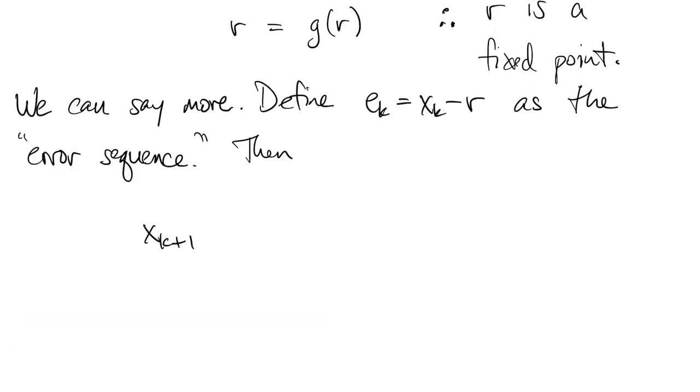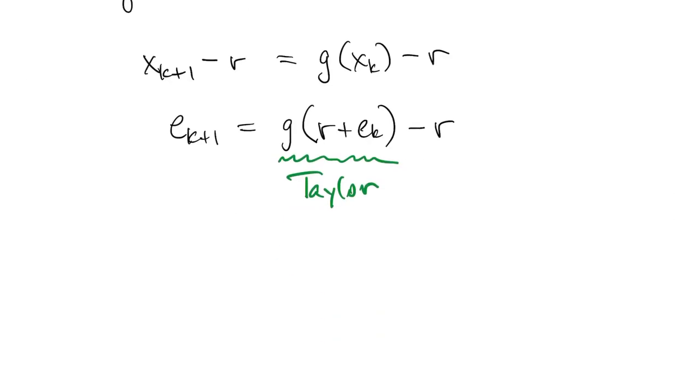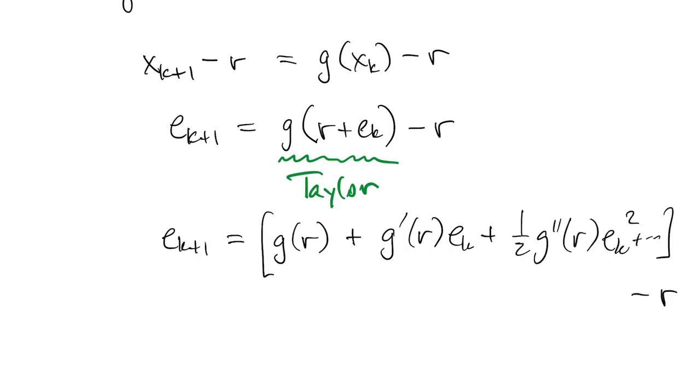So then we start with the fixed point iteration equation. Subtract r from both sides. And then we get rid of the x's and write it in terms of the e's instead. This g value we're going to apply Taylor's theorem to. So we expand around the point r. And then since r is a fixed point, we know that g of r and r cancel out.